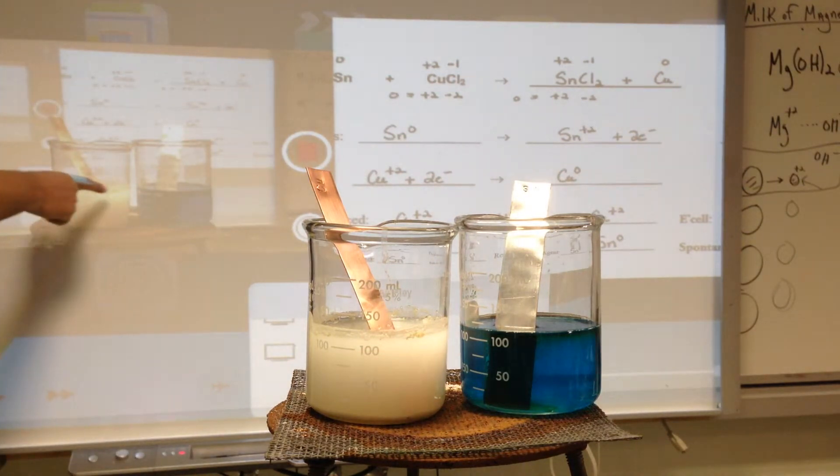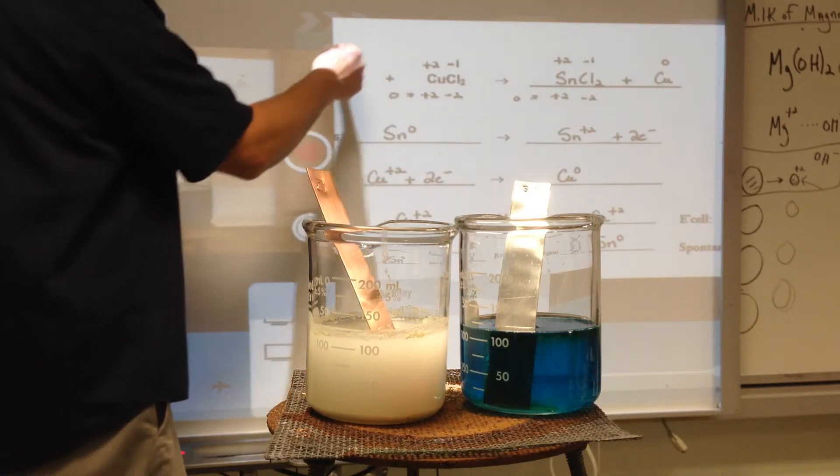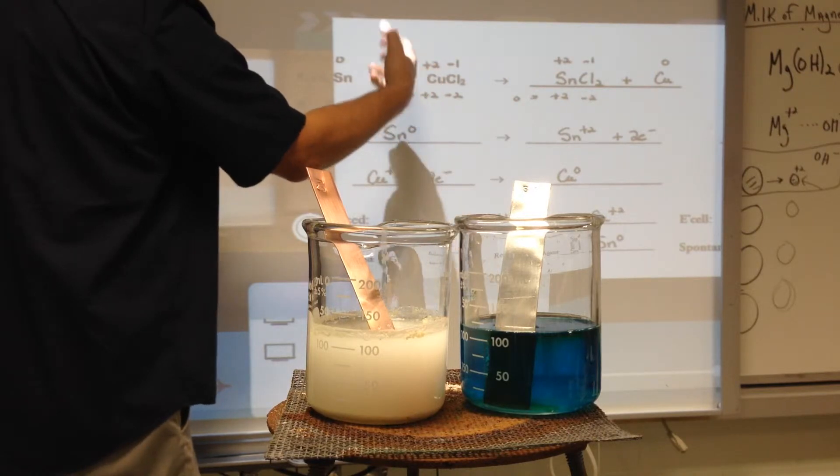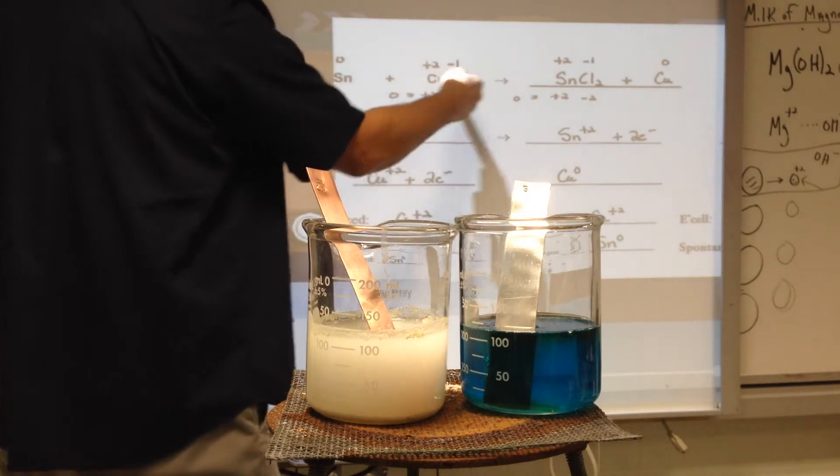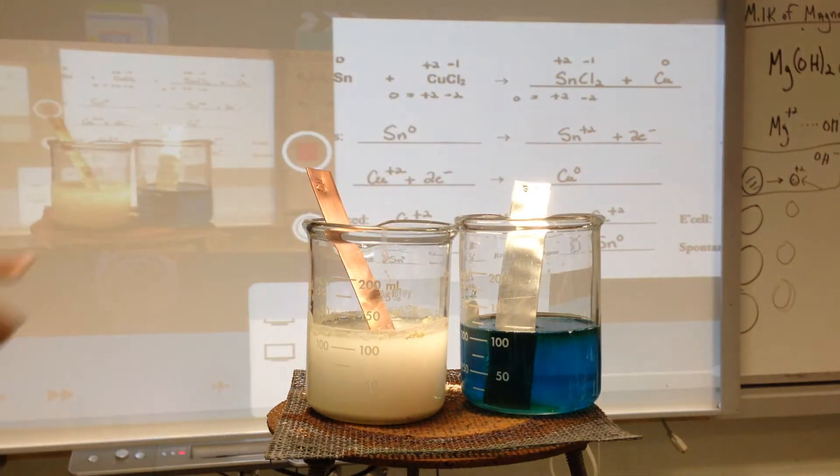The pure copper should plate onto the tin, because as the tin gives its electrons to the copper plus two, the copper plus two gets reduced and goes to copper zero, which means it's no longer attracted to the chloride ions.